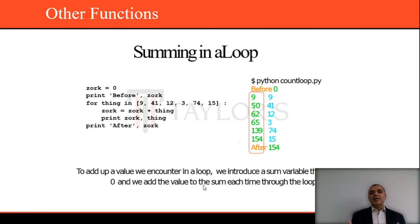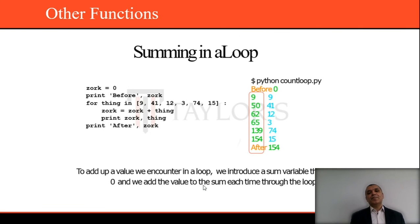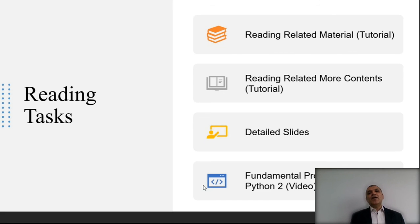Loops are not only for iteration but can serve multiple purposes. For example, we can take the sum of all iterations. The array is: 9, 41, 12, 3, 74, and 15. The loop adds up each value from the previous iteration into the new one. Finally, the last sum is 154. For each iteration it adds the values, and finally reaches the total.